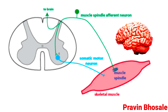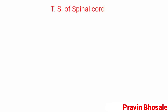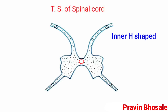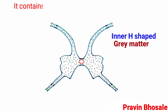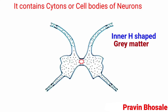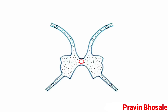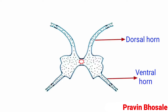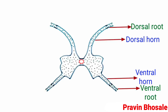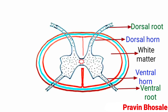The spinal cord minimizes the load on the brain. The cross-section of the spinal cord shows inner H-shaped gray matter surrounding the central canal. It contains cytons, or cell bodies of neurons. Two dorsolateral horns and two ventrolateral horns give it the H-shape appearance. The dorsal horn extends into the dorsal root, while the ventral horn extends into the ventral root of the spinal nerves.